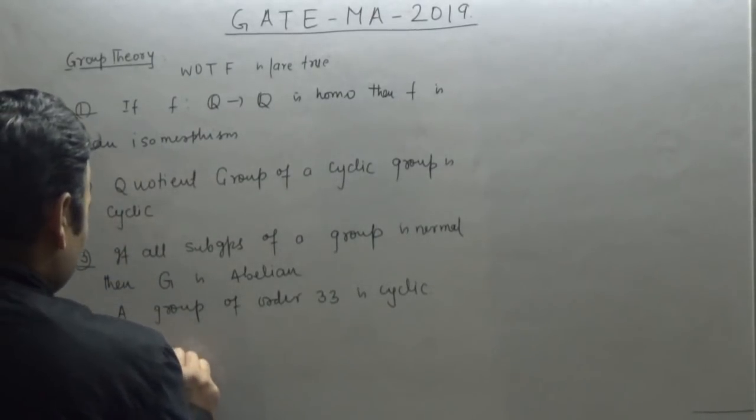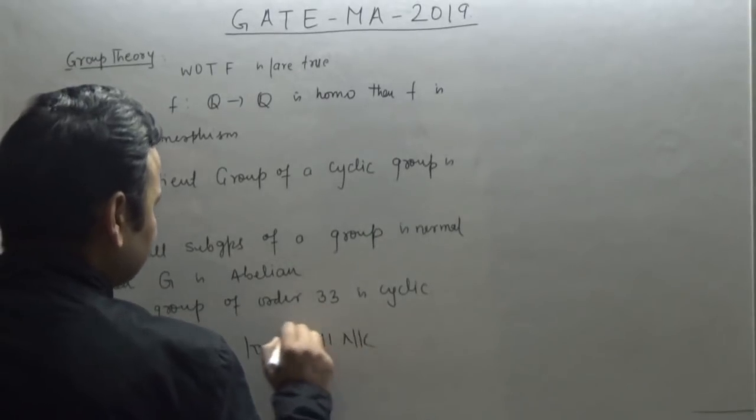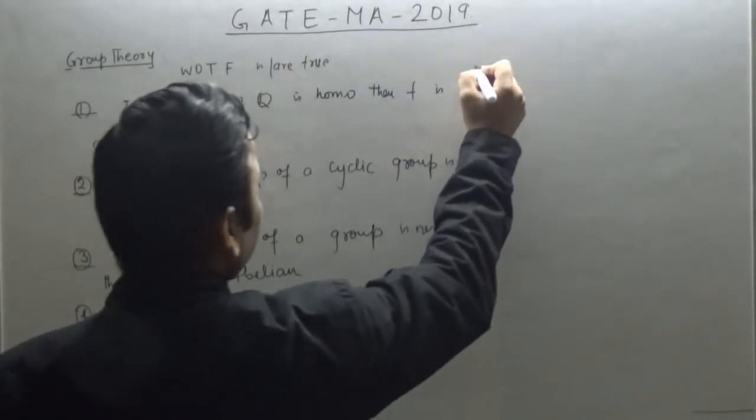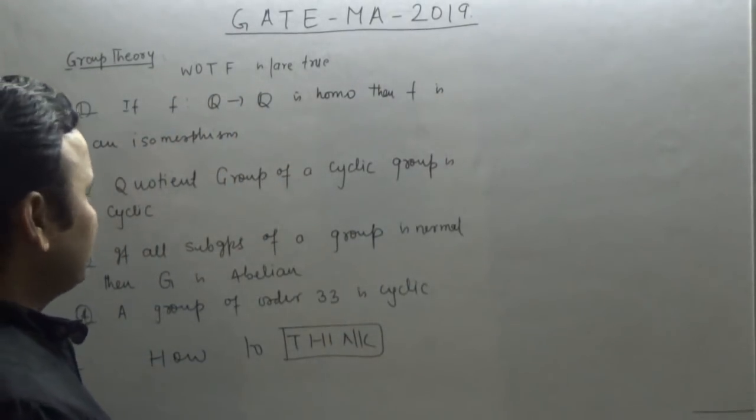How to approach this kind of problem? Let's see. If you take a homomorphism from Q to Q, does it imply this is an isomorphism?